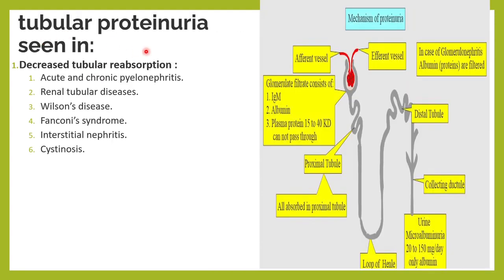Tubular proteinuria occurs because in tubulointerstitial disease the tubules cannot reabsorb proteins, and there is loss of low molecular weight proteins. This can happen in acute pyelonephritis, chronic pyelonephritis, Fanconi syndrome, interstitial nephritis, cystinosis, etc.